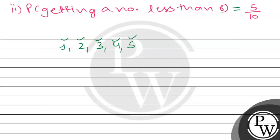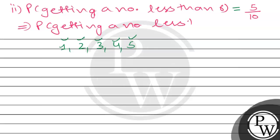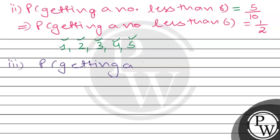The probability of getting a number less than 6: numbers less than 6 are 1, 2, 3, 4, 5 — that is 5 favorable cases out of 10 total. So the probability of getting a number less than 6 is 5 divided by 10, which is 1 by 2.